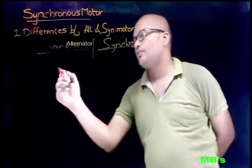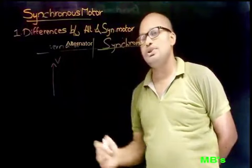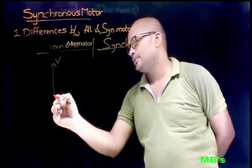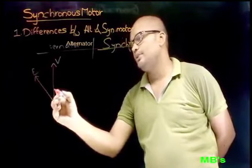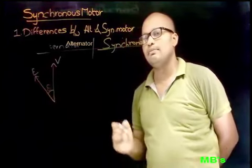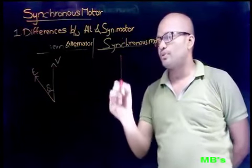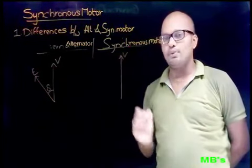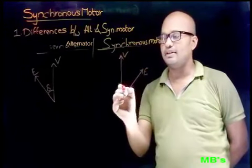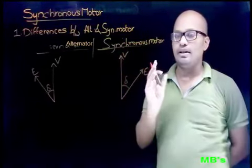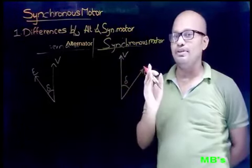In the case of the alternator, delta is considered positive. So if terminal voltage V is taken as reference, the induced EMF is said to be leading by angle delta. In the case of the synchronous motor, if V is the input voltage, then the back EMF EB is said to be lagging by angle delta.